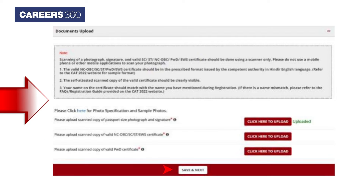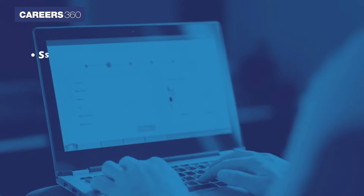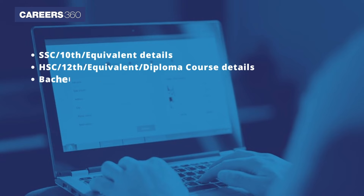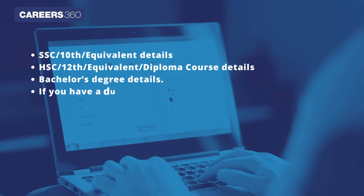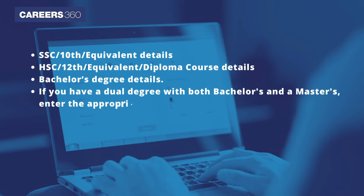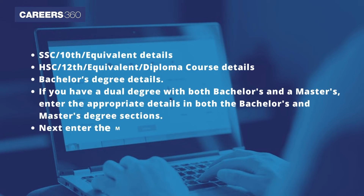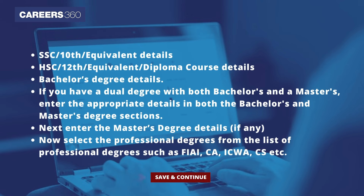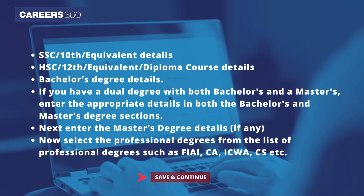Click on Save and Continue to proceed to the Academic section. Here, specify your SSC or 10th or equivalent details, HSC or 12th or equivalent or Diploma Course Details, and Bachelor's Degree Details. If you have a dual degree with both Bachelor's and Master's, enter details in both sections. Next, enter Master's Degree details if any, and select Professional Degrees from the list, such as FIAI, CA, ICWA, and CS. After adding the details, click Save and Continue.